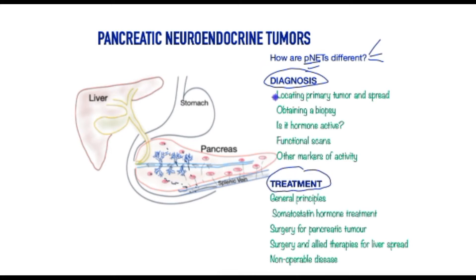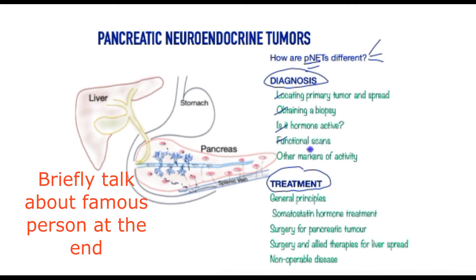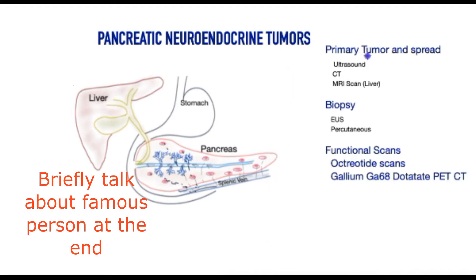In diagnosis, we wish to locate the primary tumour and whether or not it has spread, obtain a biopsy, find out whether the tumour is secreting hormones and whether the tumours carry receptors for somatostatin, a naturally occurring hormone, as well as measuring markers of activity of the tumour. The treatment will focus on the general principles, hormone-based treatment, surgery, and treatment of non-operable disease.